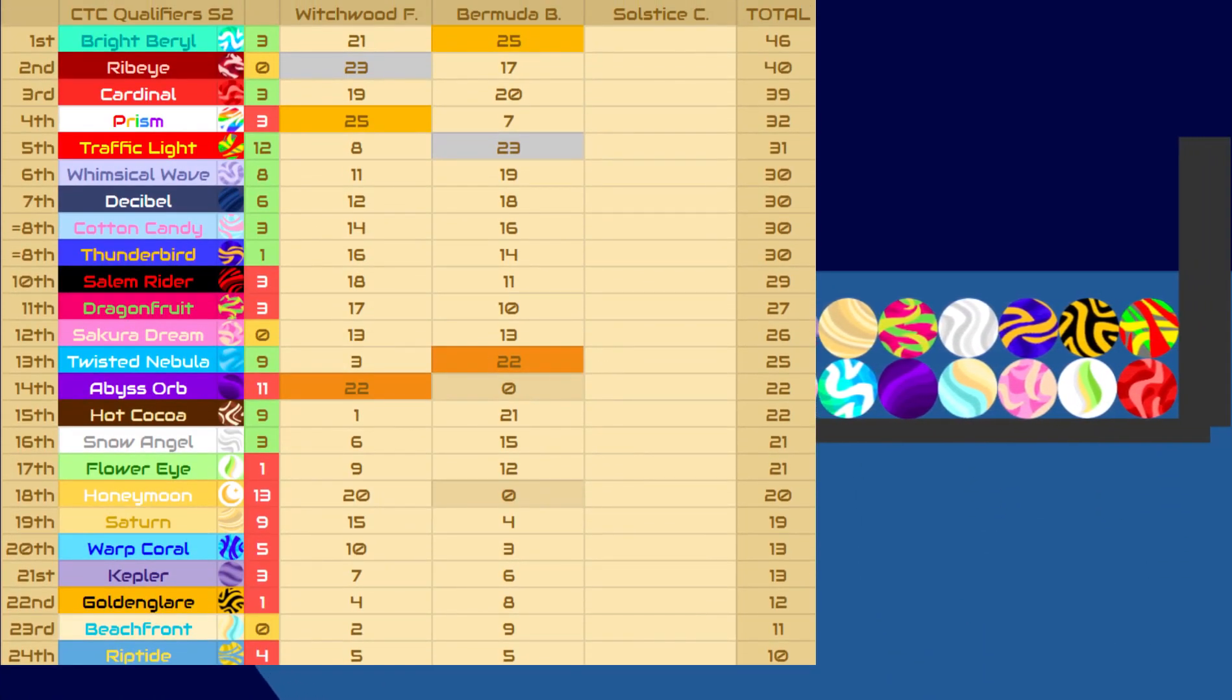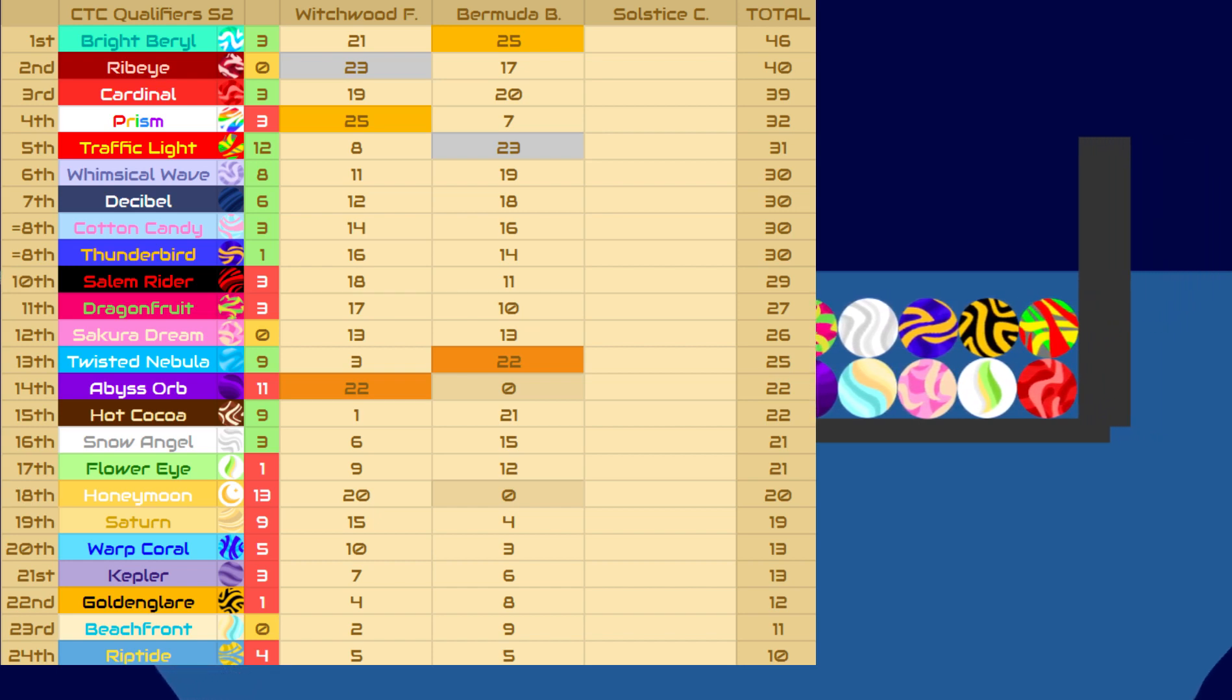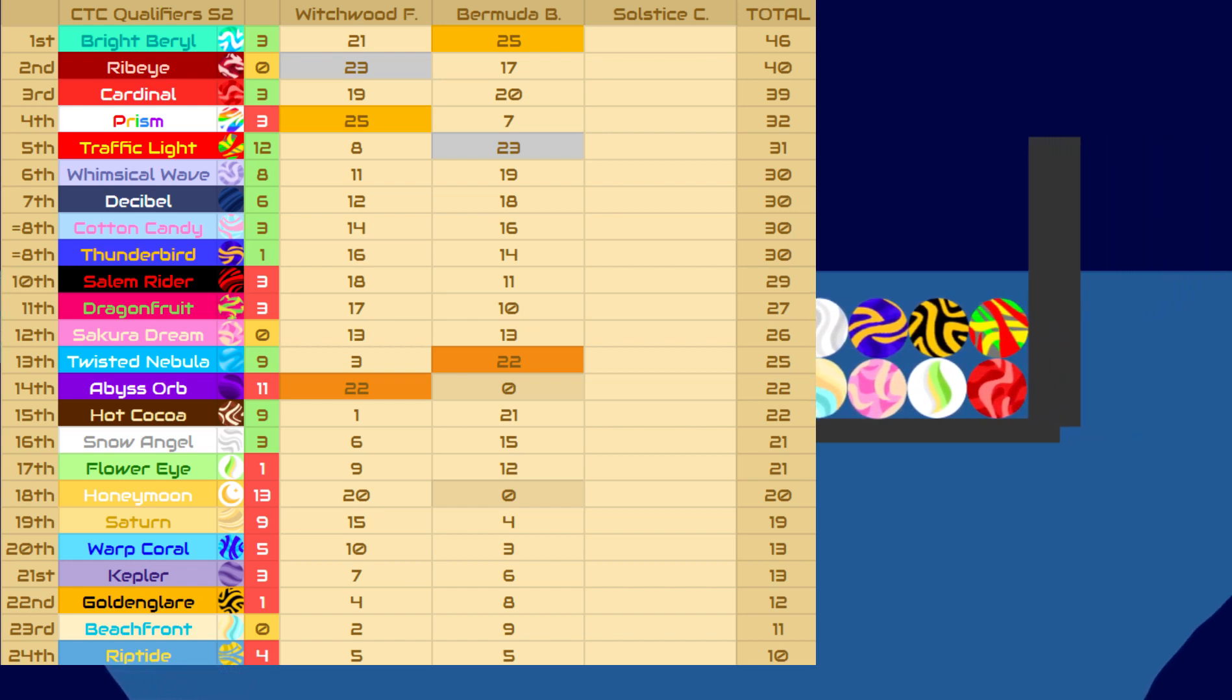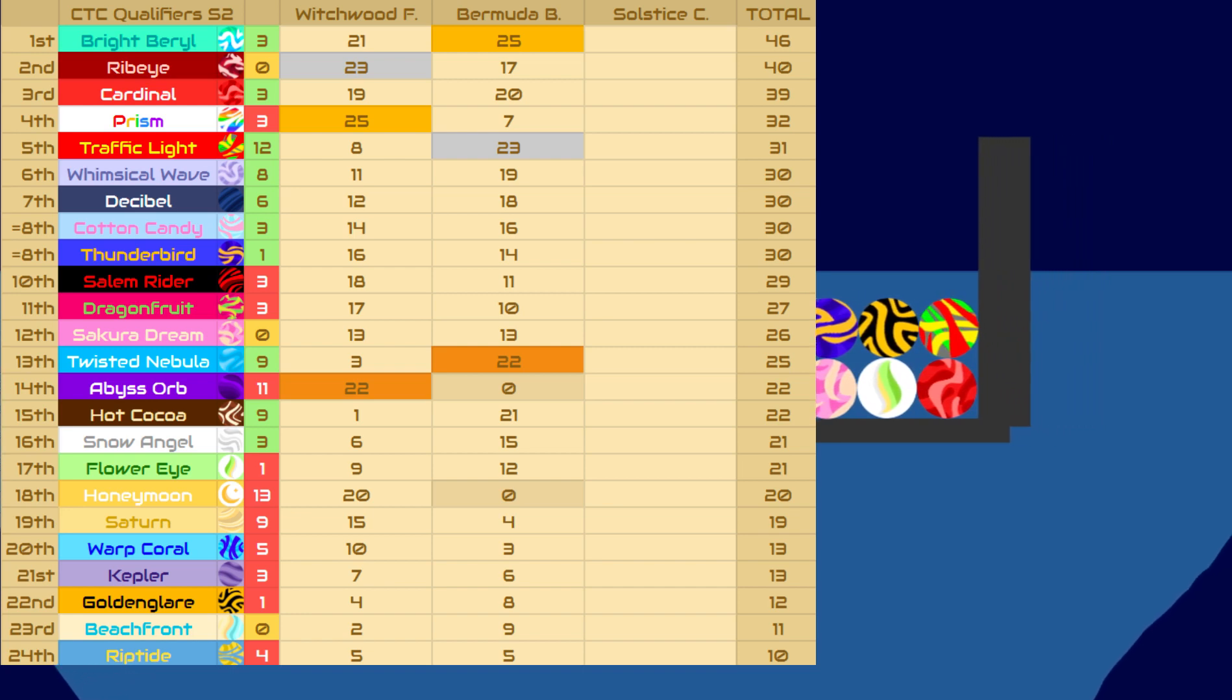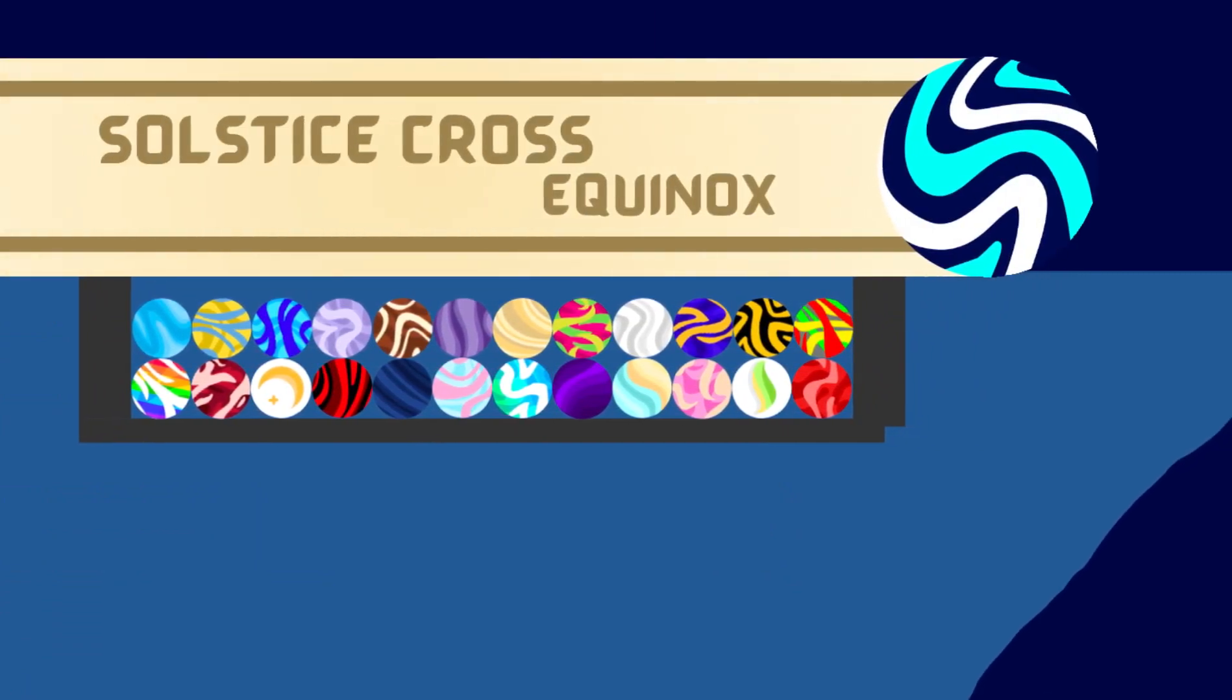Last time with Witchwood, Bright Beryl took the lead in the qualifier standings. We had some big leapers and big fallers in the standings, such as Honeymoon falling a whopping 13 spots and Traffic Light going all the way up to fifth, rising 12 spots.